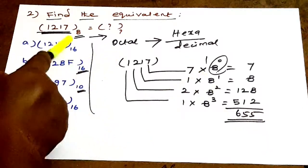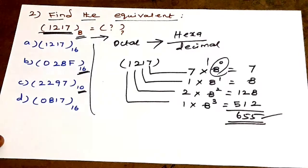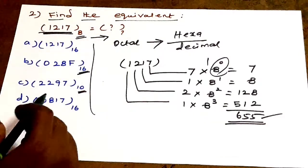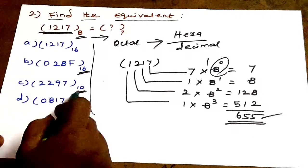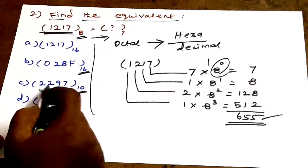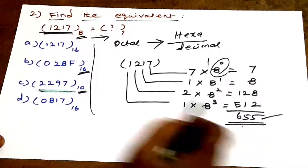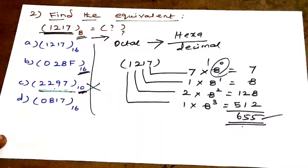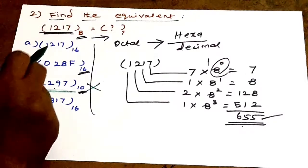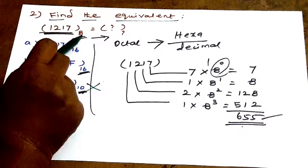After converting, the decimal value of this number is 655. The answer corresponds to option C. The octal number converts to decimal 655.